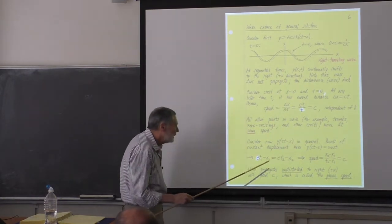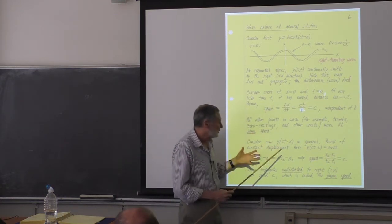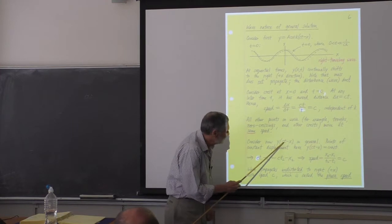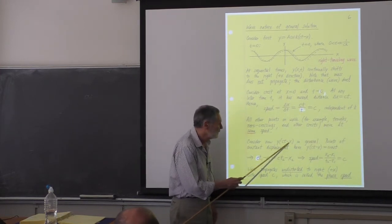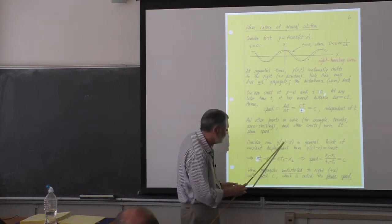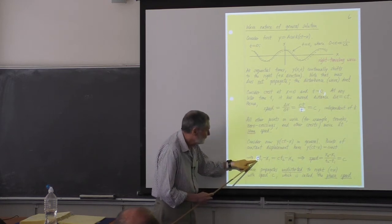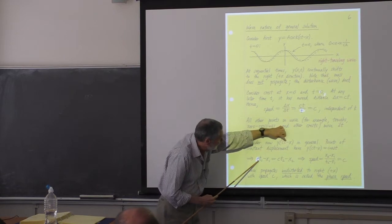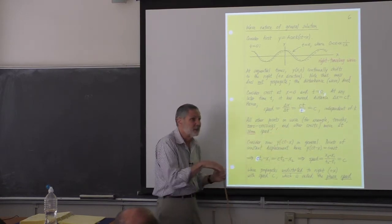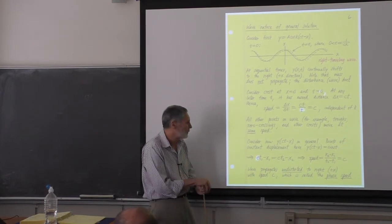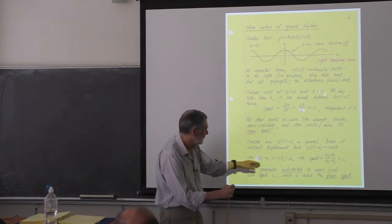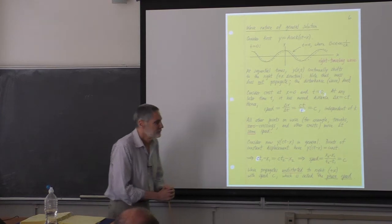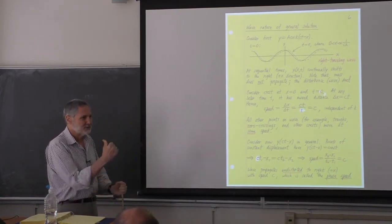Ocean waves have that property, but the wavelength has to be large compared to the depth. You can show that ocean waves, when the wavelength becomes sufficiently large compared to the depth, satisfy the wave equation in that limit. Tsunamis tend to have very large wavelengths, so they actually are approximate solutions of the wave equation, and you can calculate their speed — and it's huge.